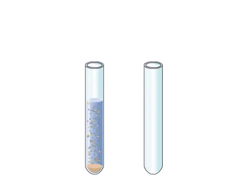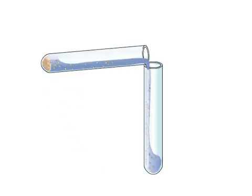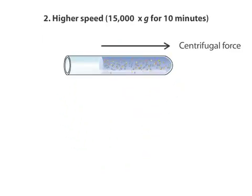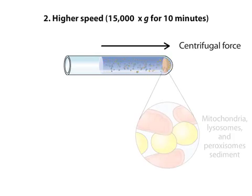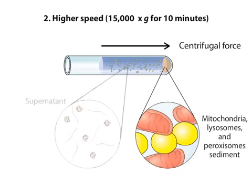The supernatant is now centrifuged at a higher speed, producing a force of 15,000 times the force of gravity, for 10 minutes, to sediment mitochondria, lysosomes, and peroxisomes. The supernatant contains smaller and less dense components.